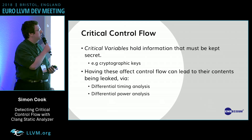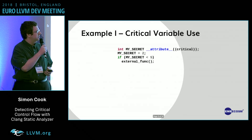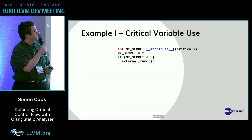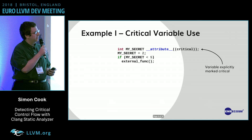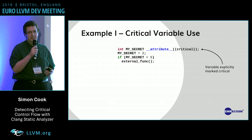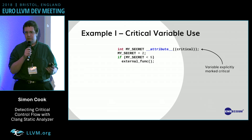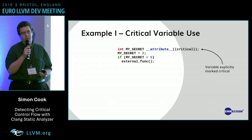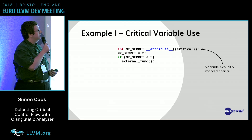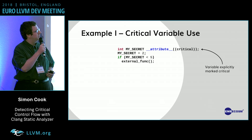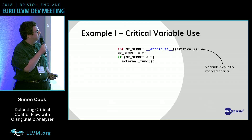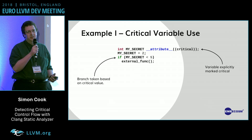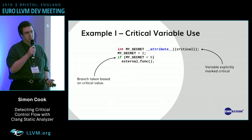As a simple example, if I have my secret here, and I've put an attribute on it to say that this thing is important — I really don't want to leak this information — well, you can see in this simple example, I have a branch here that is based on the value of that.